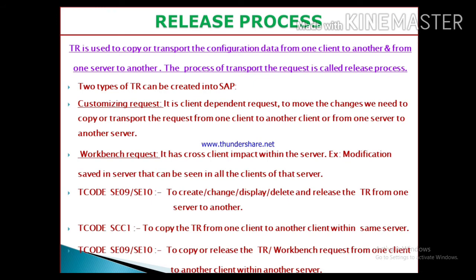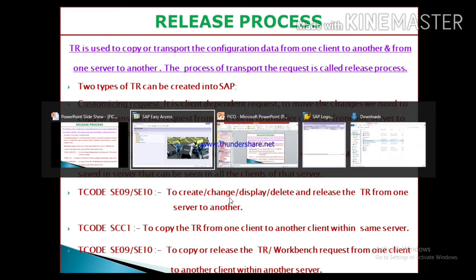Now let's go further into the steps for how to release the process, or how to copy a transport request into another client or server. The key T-codes are SE09 or SE10. Using these T-codes you can create, change, display, delete, or release a transport request from one server to another server. Let's see how to perform this — go to the SAP screen.